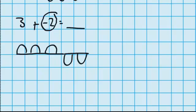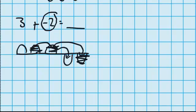You can see looking at this picture that I can use some of these hills to fill in these holes. I could put this hill in that hole, which would get rid of that hill and get rid of that hole. So it would leave me with one hill, or one. So three plus negative two is one.